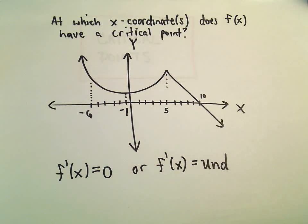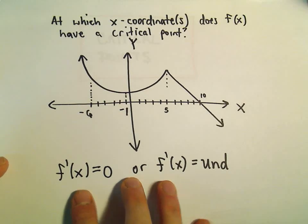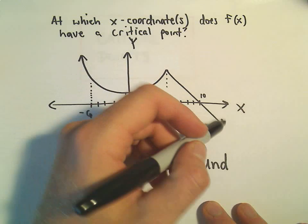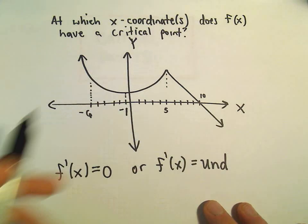And the idea also we have to keep in mind is that these points have to be in the domain of the original function. So your original graph looks like a nice, smooth, continuous function, so all points would be in the domain.